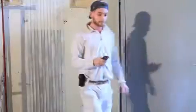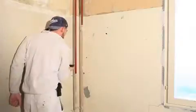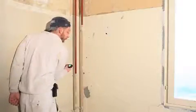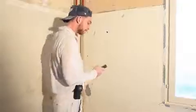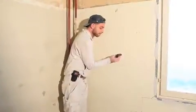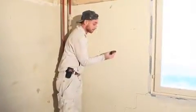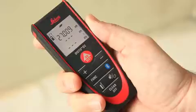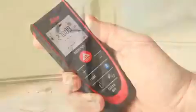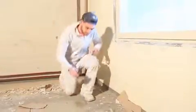Go into the opposite corner to add the third and fourth wall. Now we have the perimeter measurements. Let's measure the height.